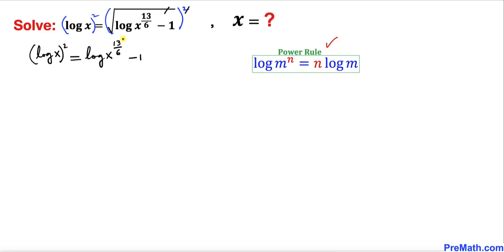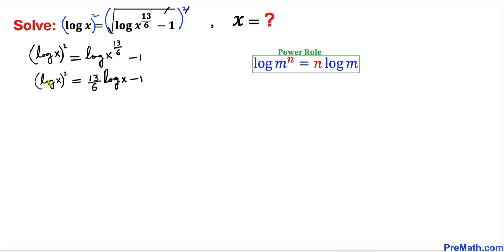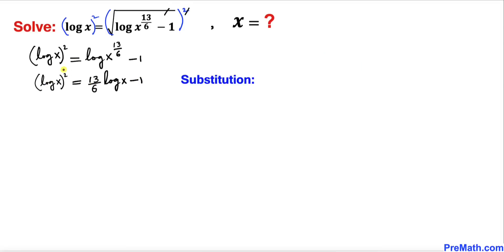Now let's recall the power rule. According to this power rule, the exponent of x we are going to move all the way to the front. So therefore our right hand side could be written as 13 divided by 6 times log of x, minus 1, and the left hand side is going to stay the same.